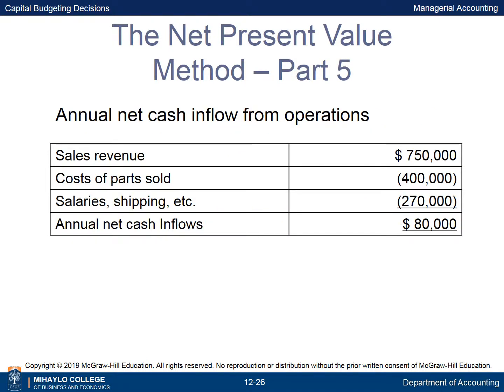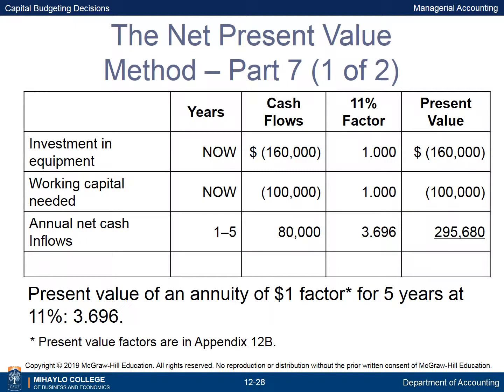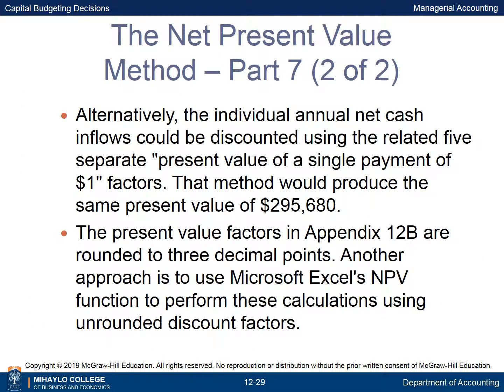The annual net cash inflow from operations of $80,000 is computed as shown. Since the investments in equipment and working capital occur immediately, the discounting factor used is 1.000. The present value factor for an annuity of $1 for five years at 11% is 3.696; therefore, the present value of the annual net cash inflows of $80,000 per year is $295,680. Alternatively, the individual cash inflows could be discounted using five separate present value of a single payment of $1 factors, producing the same result.